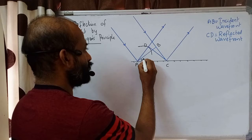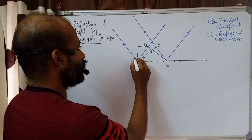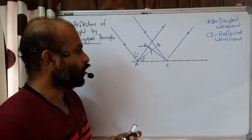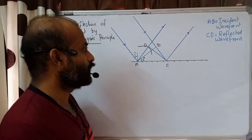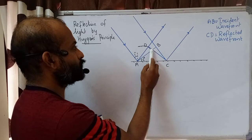We can mark the angle of incidence. The incident light rays and the incident wavefront make an angle I with the mirror surface. We know that the angle of incidence is the angle between the incident light ray and the normal. We can show that these two angles are the same — the incident wavefront AB makes an angle I with the mirror surface.